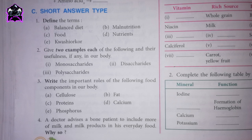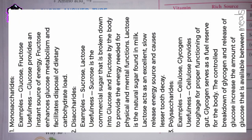Second question: give two examples each of the following and their usefulness in our body. 1. Monosaccharides. Examples: glucose, fructose. Usefulness: glucose provides an instant source of energy. Fructose enhances glucose metabolism and facilitates disposal of dietary carbohydrate load.